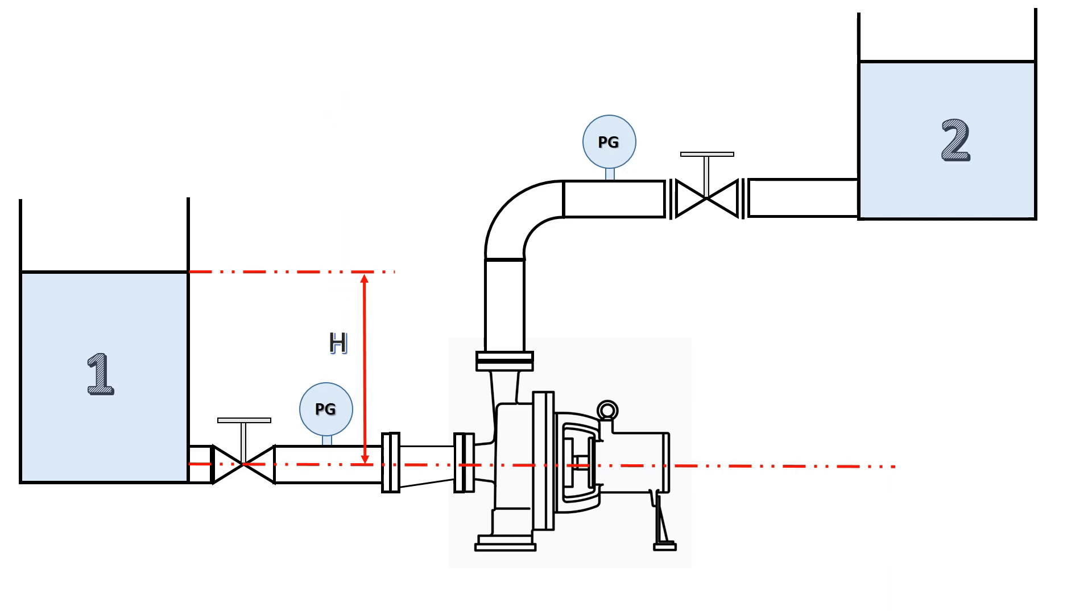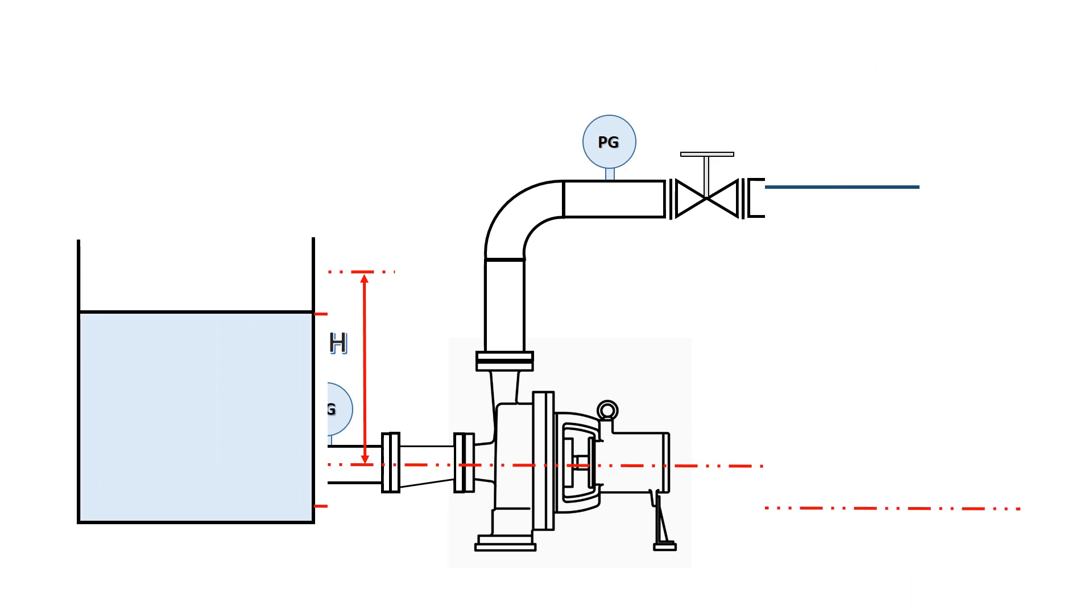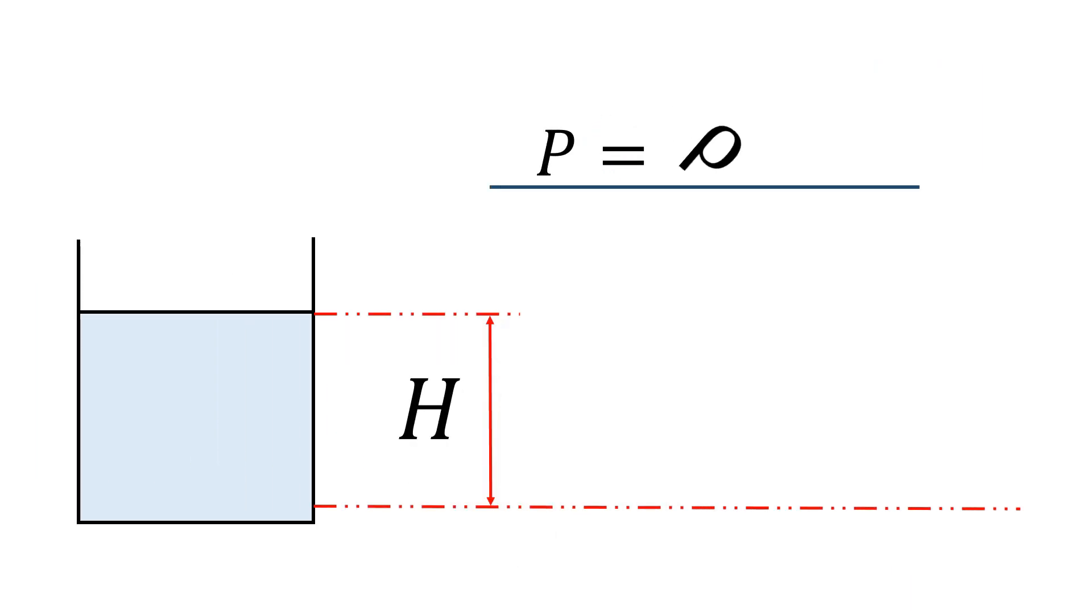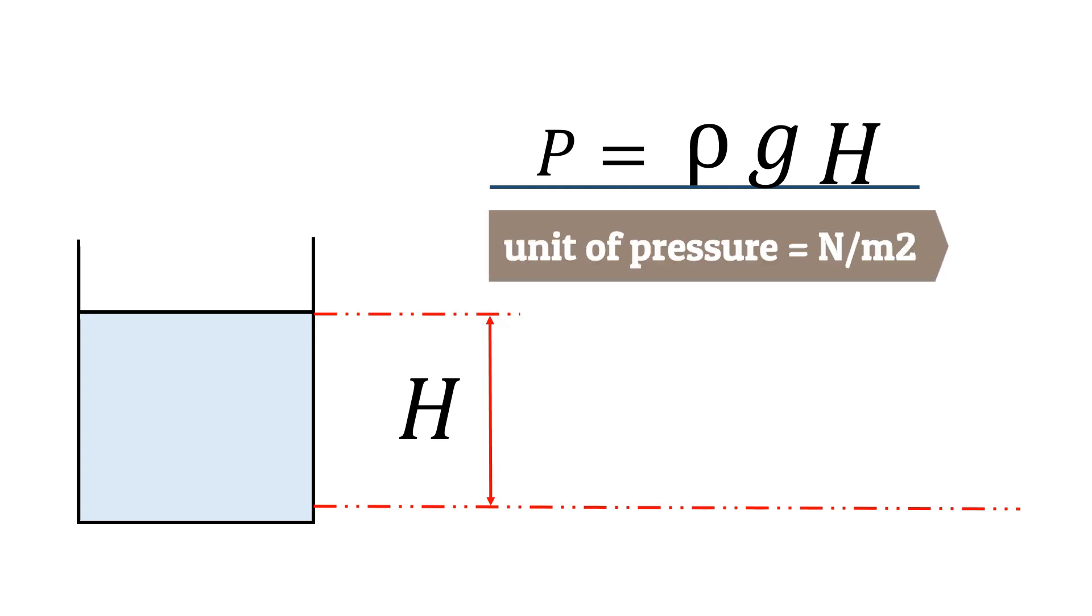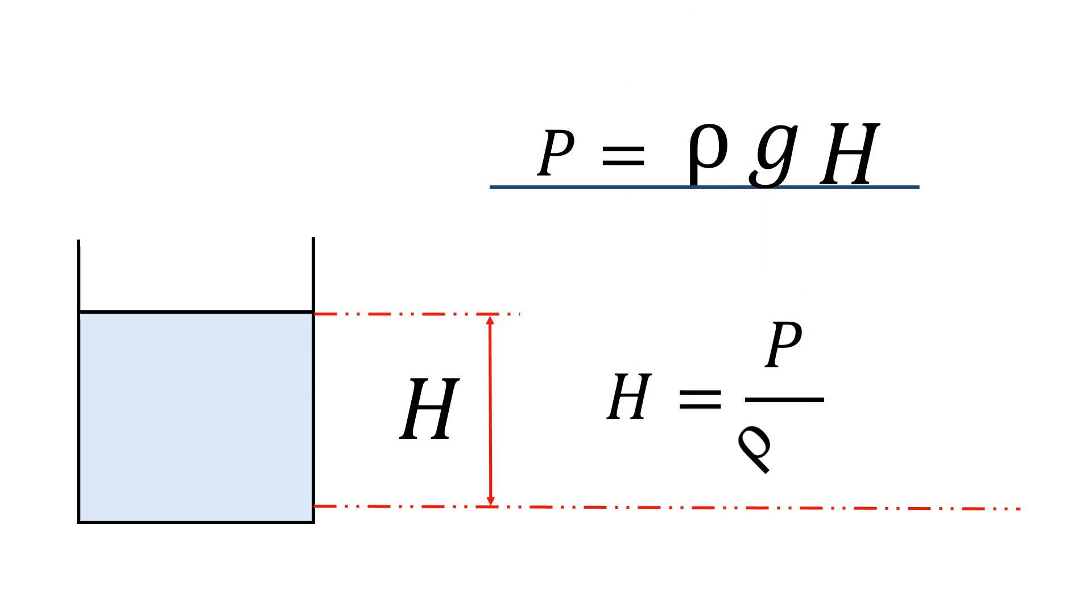The pressure at pump inlet due to water column height h can be written as water density rho times gravitational acceleration g times height h of water. Units of pressure is newton per meter square. However, it can also be written in terms of height h of water column. The unit of this pressure head is meters.